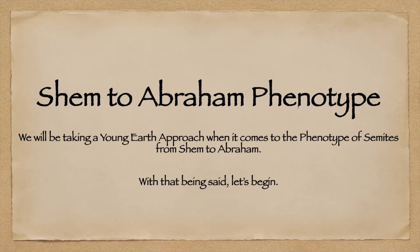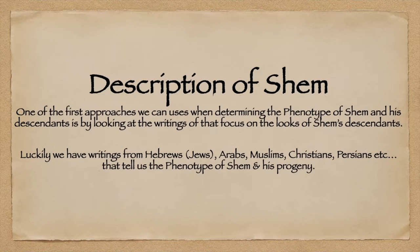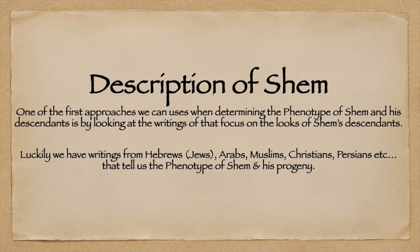We will be taking a Young Earth approach when it comes to the phenotype of Semites, starting from Shem to Abraham. One of the first approaches we can use when determining the phenotype of Shem and his descendants is by looking at writings that focus on the phenotypes and look of Shem's descendants. Luckily, we have writings from Hebrews or Jews, Arabs, Muslims, Christians, Persians, and many others that tell us the phenotype of Shem and his progeny.